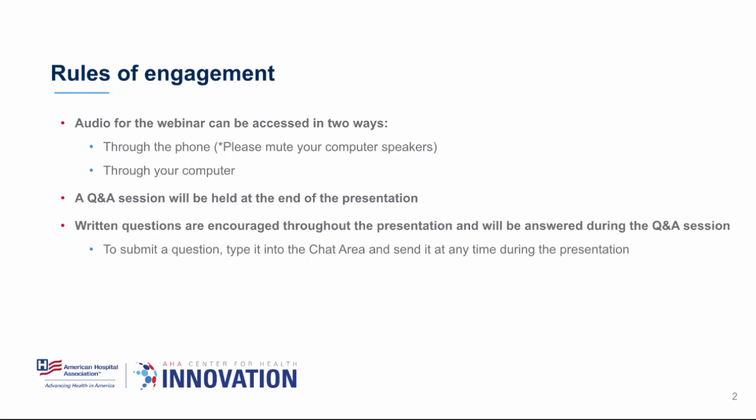Today's webinar has similar rules of engagement as always. You can listen to the webinar two different ways: through your computer, which might be the easiest way especially if you're at home right now, or through your phone. If you're listening through your phone, you're going to want to do something a little different. There's a brief video in this presentation, so if you're listening with your phone, go to the little green speaker icon at the top of your screen and choose 'mute conference audio only.'